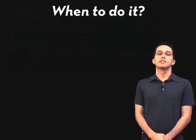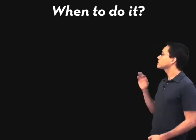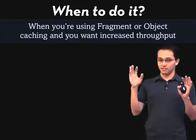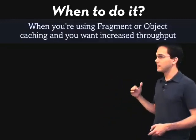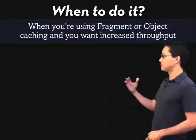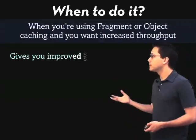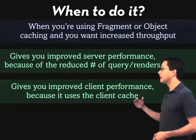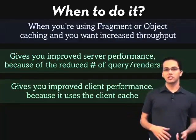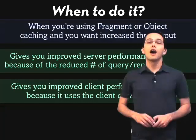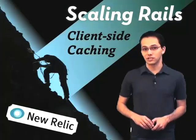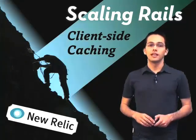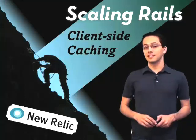Now that you know how to do some of this client-side caching, let's make sure it's clear when to do it. First, you want to do it after you've used fragment or object caching and you've increased throughput. After you've cached as much as you can using those previous methods and you want even more throughput and to save CPU time, you should implement it. It's going to give you improved server performance by reducing the number of queries and renders you have to do, and your clients are going to see improved performance because the client cache on their browser will be used more often. A few months ago, 37signals implemented e-tags on their Basecamp application and found that it increased response time for users, decreased CPU load, and also decreased database load. So take a look at their article if you want to see an example of this in use.